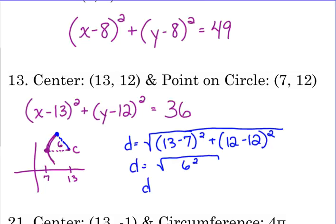So that would give us that the distance is 6. That's the radius. The equation is equal to the radius squared.